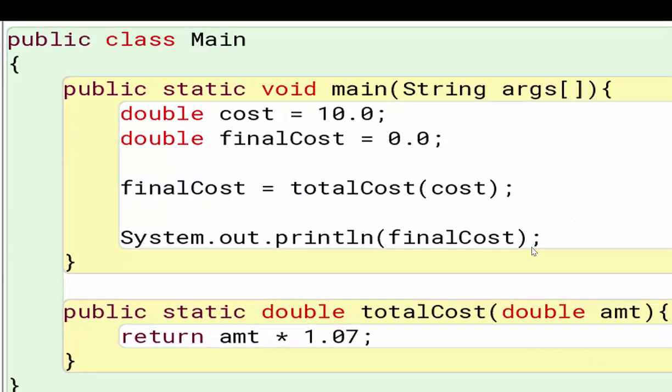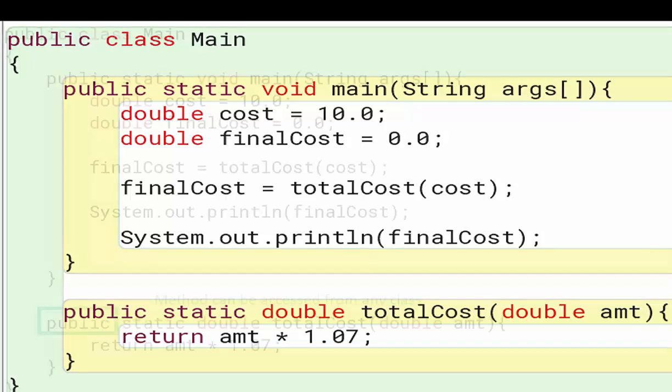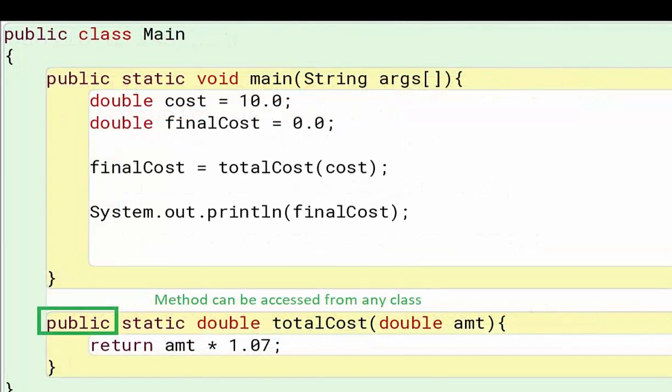Now that we've seen our code run, let's break down what all these words inside of our totalCost method actually mean. The first word that you're going to see is public. And all that means is that the method can be accessed from any class. Here we're inside of our public class main. I can access this method from within the main class, but I can also access it from any class because it is a public method. That is all that public means.